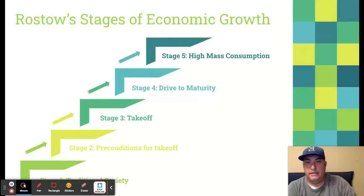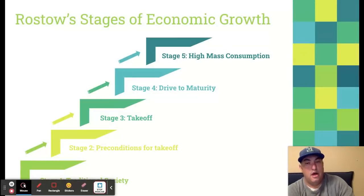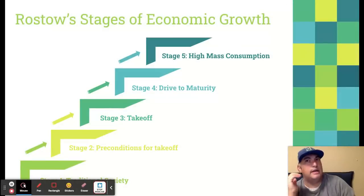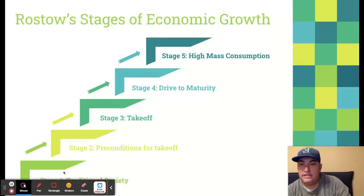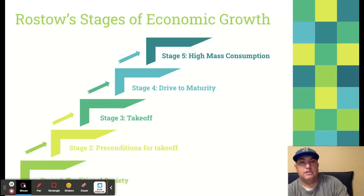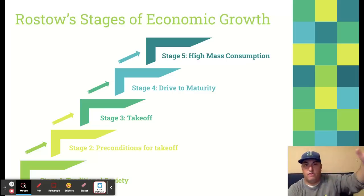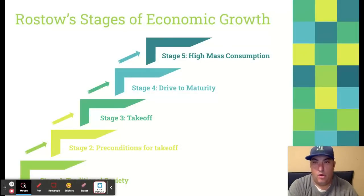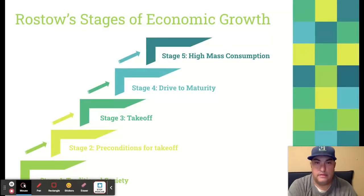Rostow is one of the guys who got the shout-out in the CED. You should know his stages of economic growth. Remember that sectoral transition I was talking about? This is what Rostow has essentially done — he's laid it all out for us in stages. Imagine these countries at the very beginning of that economic sectoral transition over here in stage one, stage two, stage three — they get to that takeoff stage and now they're industrializing. Then stage four and stage five is when they're making that switch over to the tertiary sector and now they're really making some money. Make sure you know Rostow's stages of economic growth — you should know the difference between the stages.